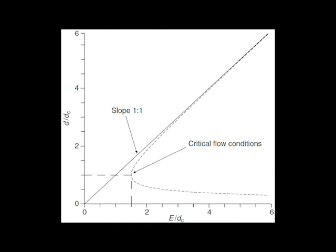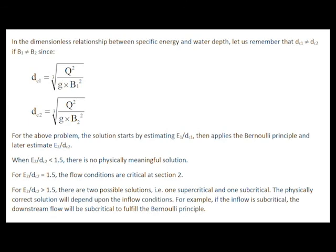When the ratio e2 over dc2 is less than 1.5, there is no physically meaningful solution. When it is equal to 1.5, there is only one solution, so flow conditions are critical at section two.